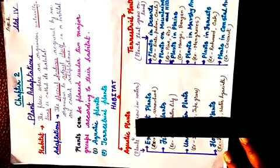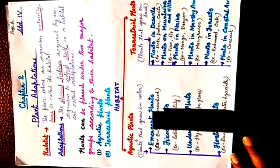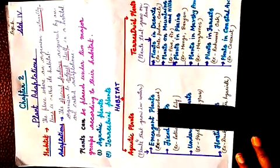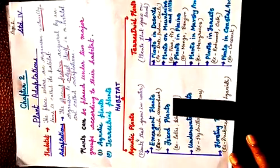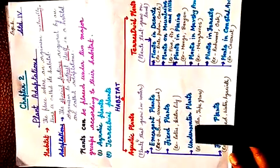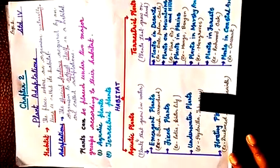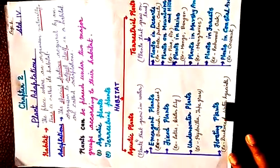Aquatic plants are of four types: emergent plants, fixed plants, underwater plants, and floating plants.